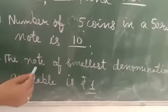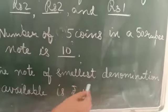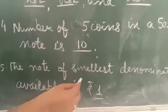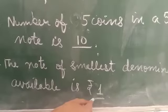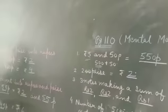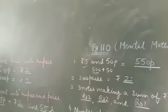Next: the note of smallest denomination available is 1 rupee. I hope you understood the topic. Complete this exercise in your book. Okay, bye-bye.